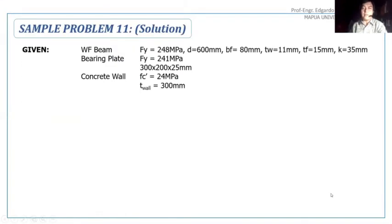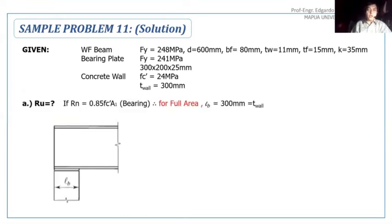These are the given based from the problem - the properties of the wide flange beam, the F-Y, the bearing plate F-Y and its dimension, and the concrete wall whose fc' and thickness were also given. For the solution, part A would be what would be the ultimate reaction Ru against bearing.